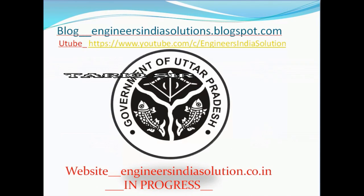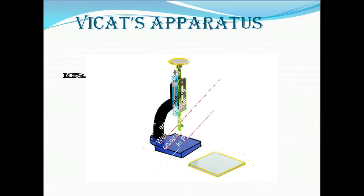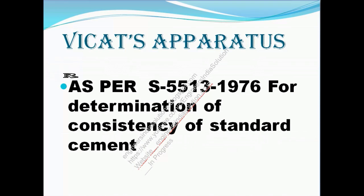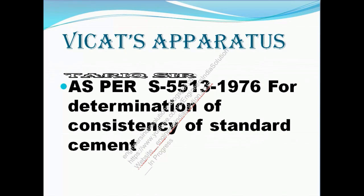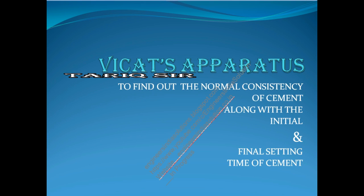It is my sincere advice that instead of joining a coaching at the later stage, you collect all this matter and be in contact. Here we have the Vicat apparatus — this is how it looks like. We will go through the details of the Vicat apparatus as per IS 5513:1976, which is for the determination of the constancy of standard cement. From the Vicat apparatus, we shall be finding out the normal constancy of cement.